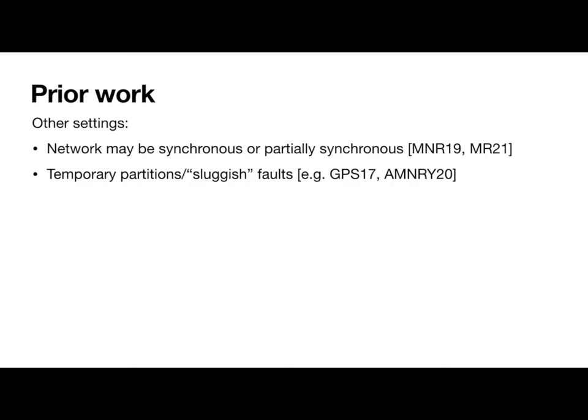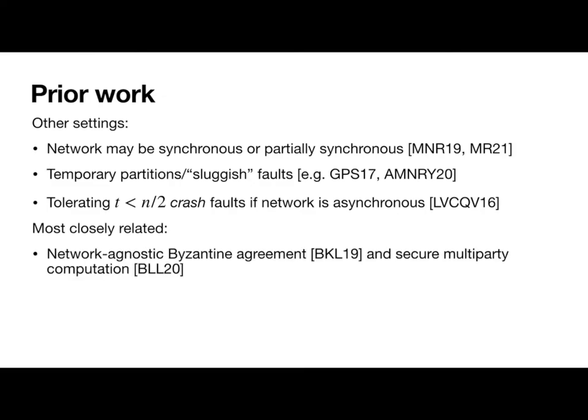To give us an idea of what's been done before, I'll just briefly mention a few related questions that have been considered in the literature. This is by no means exhaustive, but hopefully it provides a reference point. There's been prior work looking at networks that might be synchronous or partially synchronous, looking at temporary partitions or sluggish faults, looking at tolerating up to N over 2 crash faults if the network is asynchronous, and most closely related is our prior work on network agnostic protocols for Byzantine agreement and also secure multiparty computation.